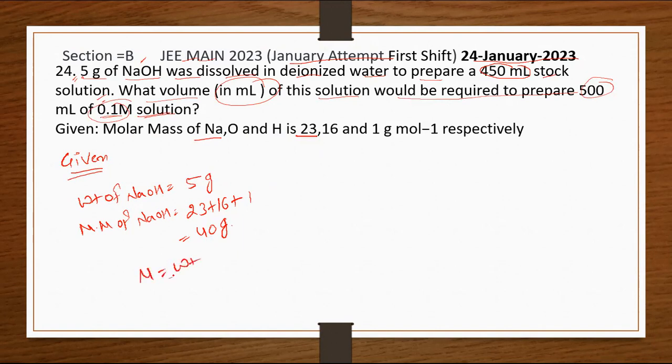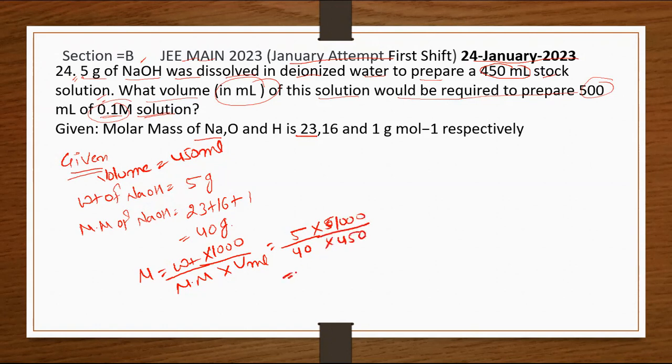Now we'll apply the molarity formula, which is weight upon molar mass into thousand upon V in mL. The volume given in the question is 450 mL. So putting the values: 5 divided by 40 into thousand divided by 450 mL.